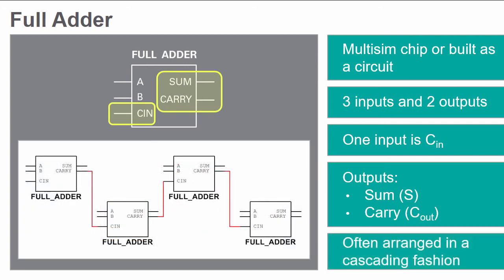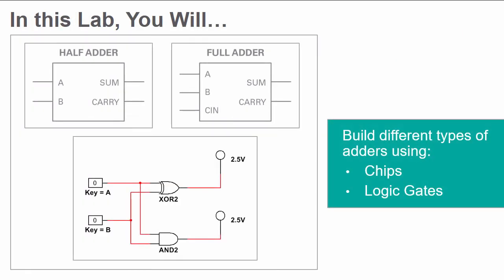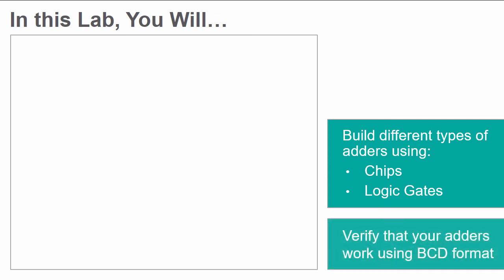Full adders are often arranged in a cascading fashion where the C-OUT of one adder is connected to the C-IN of the following adder. In this lab, you will be building different types of adders using both chips and logic gates, and verifying they work using binary coded decimal BCD format.